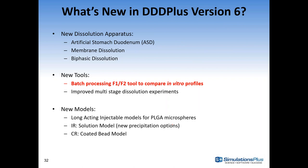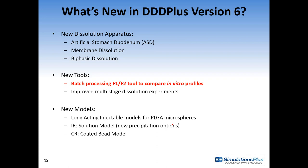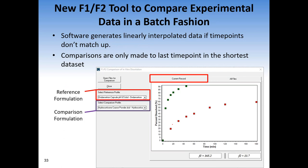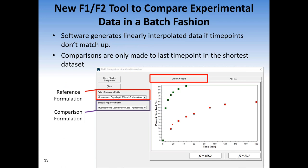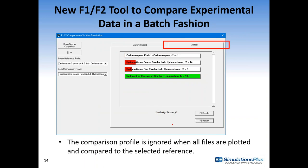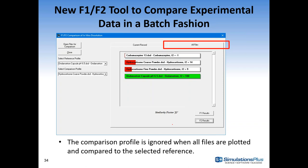Some new tools in DDD Plus include a new batch processing tool to compare in vitro profiles. You can load in a large number of DSD or in vitro dissolution files, select a reference profile and a comparison profile, and compare the F1 and F2 statistics. You can also compare against all files — for example, if you read in 50 files, select one as the reference and it will calculate F1 and F2 against all imported files, allowing quick comparisons of many in vitro experiments.